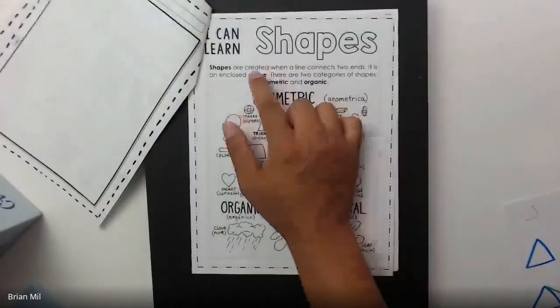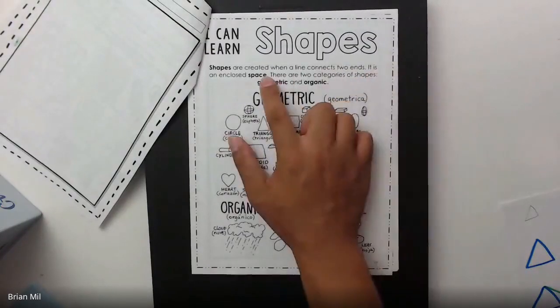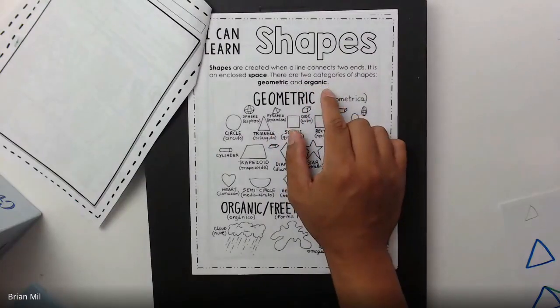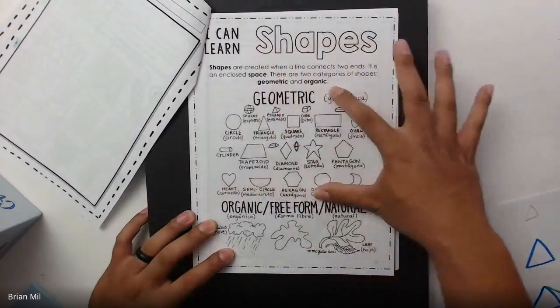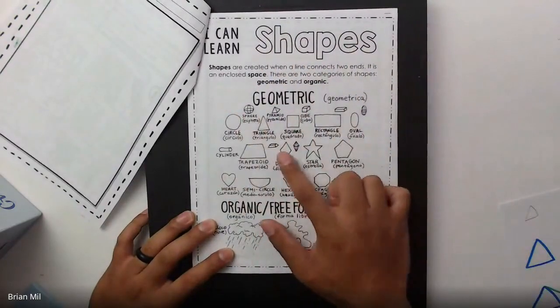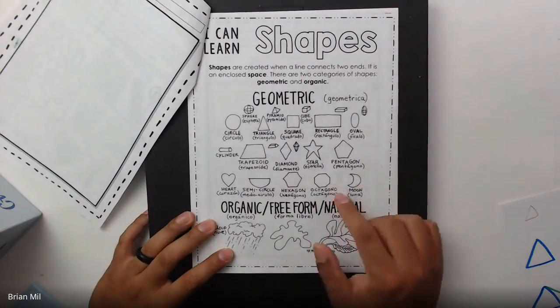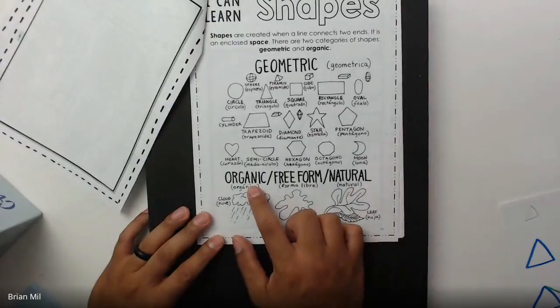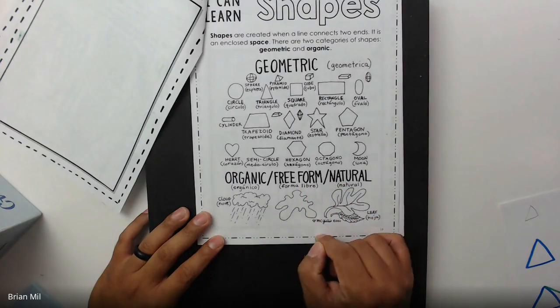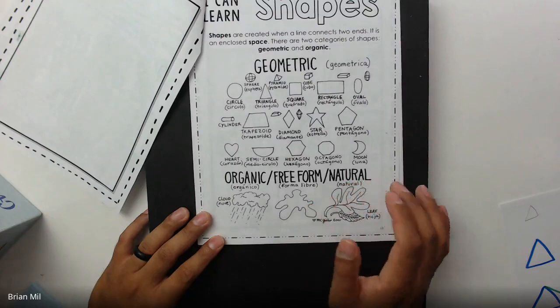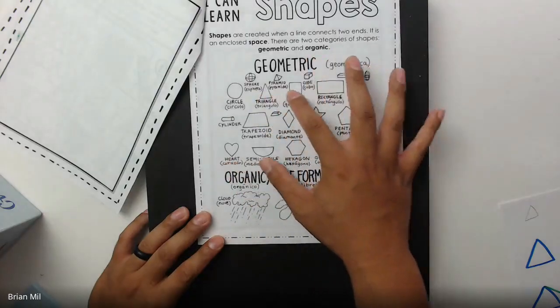And again, if you don't have this workbook, use a blank sheet of paper. So let's start off by reading what it says. I'm going to turn off chat. There's too much chat going on. It says I can learn shapes. Shapes are created when a line connects two ends together. It's a closed space. There are two categories of shapes: geometric and organic. This top section right here are all types of geometric shapes, such as circles, trapezoids, hearts, pentagons, rectangles, ovals, moon, and so on. But down here, these are organic, free-form, and natural shapes, such as a cloud, a leaf, or a game controller.